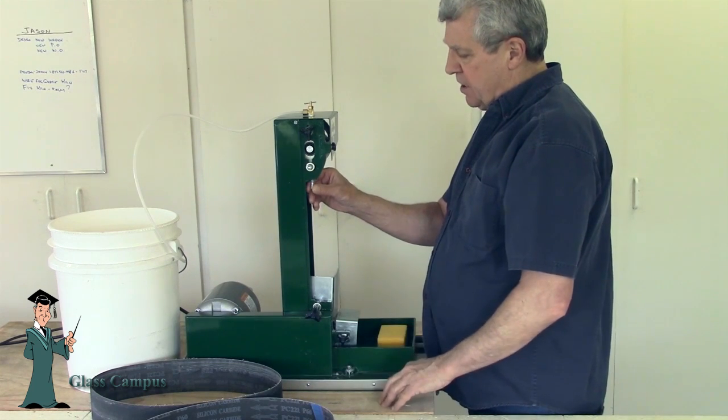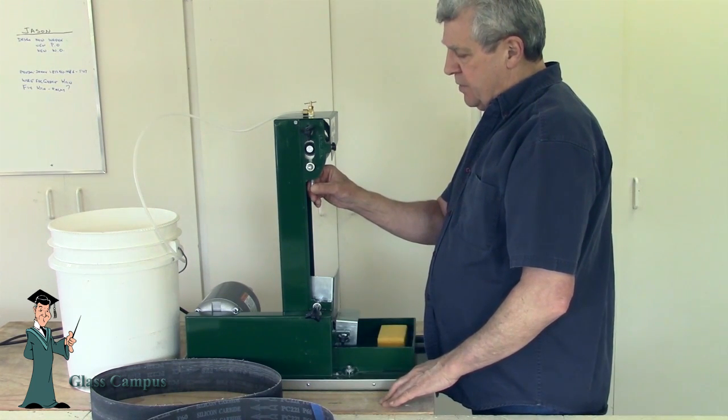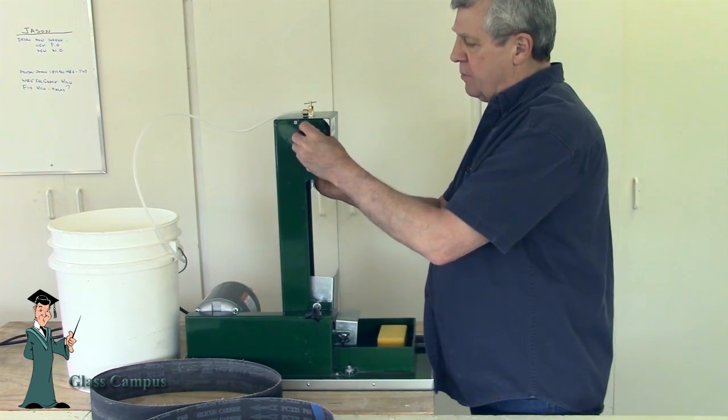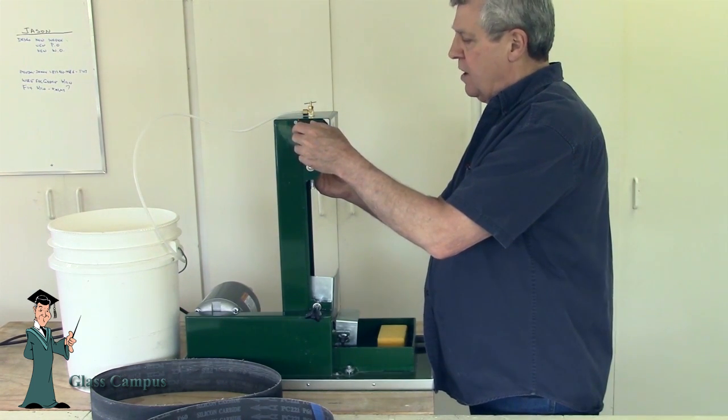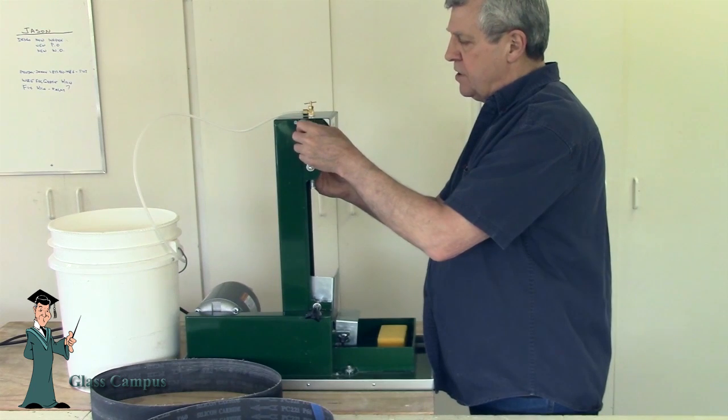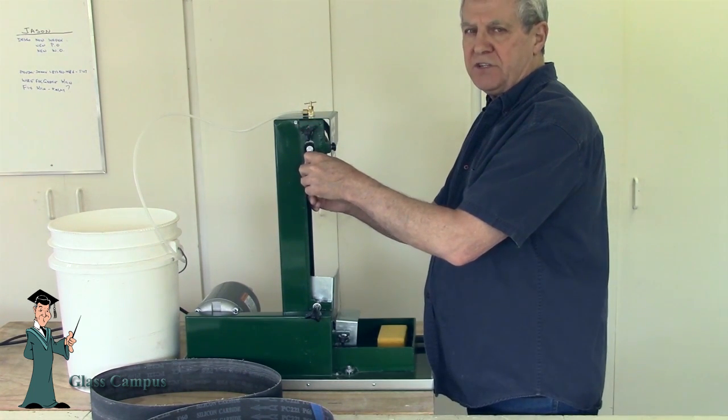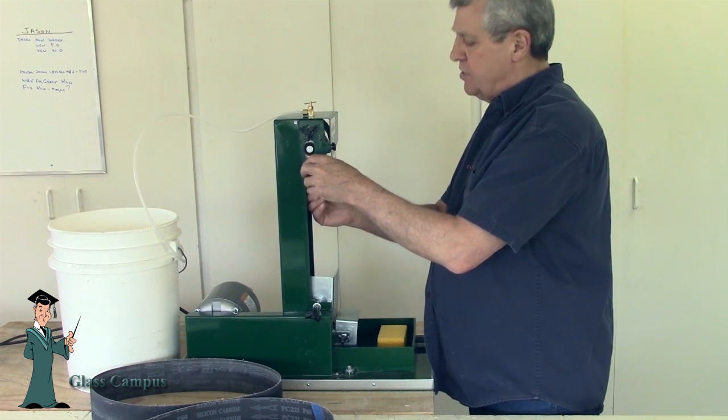This particular adjustment is rarely needed to be played with, but this moves this entire belt up and down. So if you find that you're having inordinate difficulty getting the belt on, you can loosen it. If you find that the belt isn't getting as tight as you'd like, you can tighten it.